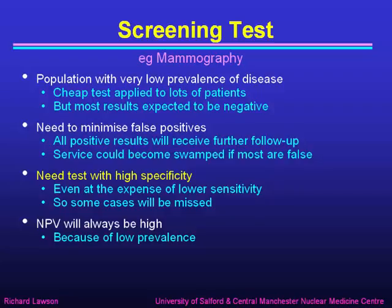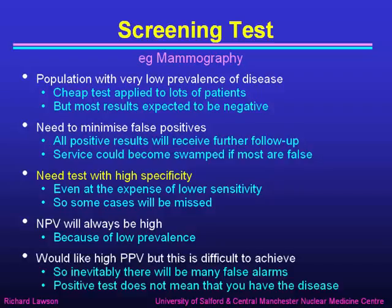So we need a test with high specificity. High sensitivity is not good enough — it gives far too many false positives. We have to go for high specificity, even at the expense of lower sensitivity. We will inevitably miss some cases because sensitivity won't be as high as we'd like. The negative predictive value will always be high with low prevalence, but the positive predictive value will be disappointingly low, meaning many false alarms. A positive test doesn't mean you have the disease — and that is the case with mammography, where most positive mammograms turn out to be false alarms.